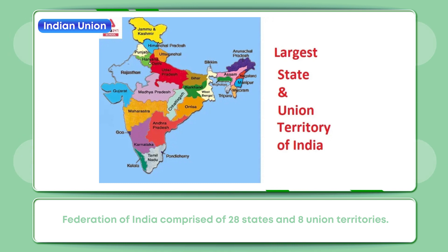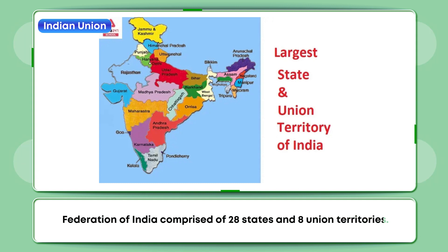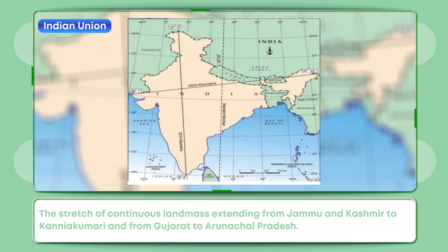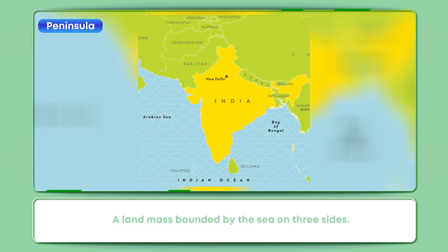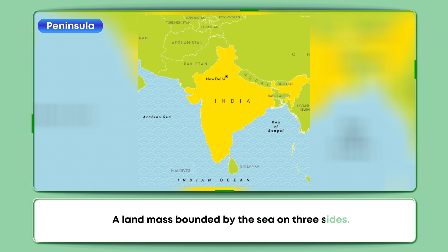Indian Union: Federation of India comprised of 28 states and 8 union territories. Indian mainland: The stretch of continuous land mass extending from Jammu and Kashmir to Kanyakumari and from Gujarat to Arunachal Pradesh. Peninsula: A land mass bounded by the sea on three sides.